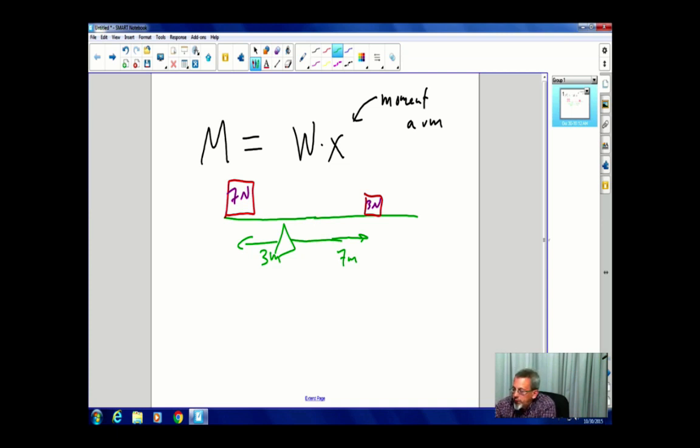Well, let's find the moment for each of these. The moment on the left, in this case, is 7 newtons times 3 meters. So that's going to be 21 newton meters. And if I go to the other side, I have 7 meters times 3 newtons, which is again 21 newton meters. Notice, to balance them, the moments are equal.